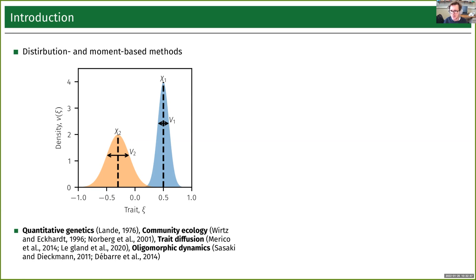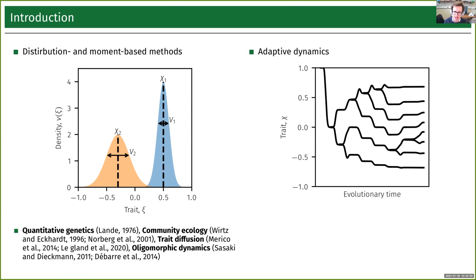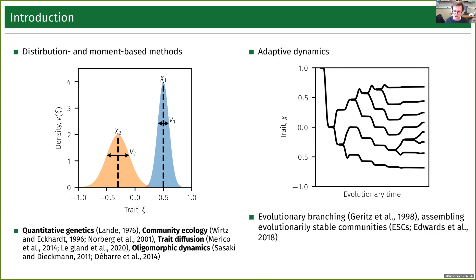The other big tool in your toolbox is adaptive dynamics, where we are not tracking entire distributions, but instead just describing each species or ecotype by a single trait value. The benefit of using adaptive dynamics is that you can track evolutionary branchings, and you can use this for community assembly, as shown in this picture. Over time, we can put together an eco-evolutionarily stable community that is characterized by no further evolution happening and is uninvasible by any other trait.